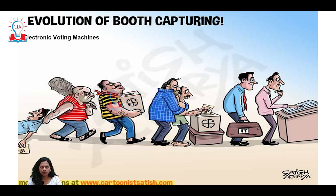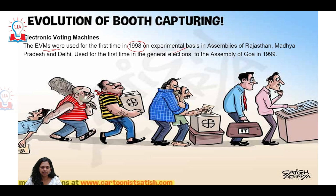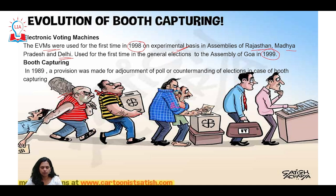Other important reforms include the introduction of Electronic Voting Machines. They were used for the very first time in 1998 on an experimental basis in some states — Rajasthan, Madhya Pradesh, and Delhi. It started being completely used post-1999 in all states of India. There were also issues of booth capturing and tampering — through manpower, muscle power, money power, or ballot paper and EVM tampering.